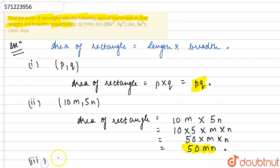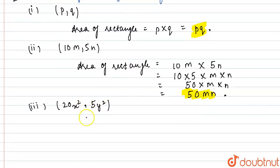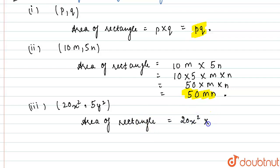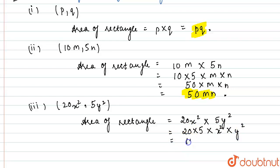In the third part, we have the pair as 20x² comma 5y². Again we find the area of rectangle: 20x² multiplied by 5y². Writing like terms together: 20 into 5 is 100, multiplied by x² multiplied by y². So the answer is 100x²y².